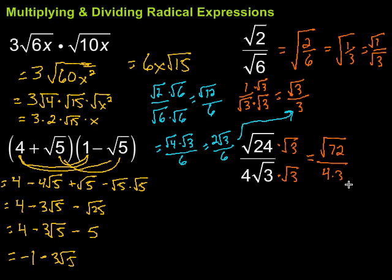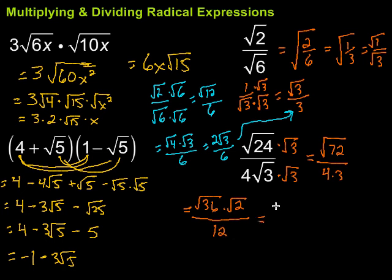Now for square root of 72, I look for perfect square factors. 9 goes in there, but 9 times 8 is 72 and 8 still has a perfect square factor, so I should look for something bigger. 36 times 2 is 72 — perfect. So I have the square root of 36 times the square root of 2 all over 12. Square root of 36 is 6, giving 6 times square root of 2 over 12. Dividing top and bottom by 6 gives the square root of 2 over 2.